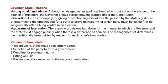Another friction point is the deadline for proving majority — when there is a tie and they have to prove the majority. There is also friction over sitting on bills and passing negative remarks on state administration, whereas the governor's role is mainly to interact between the state and central government.